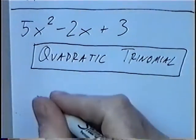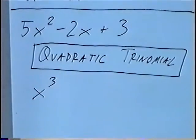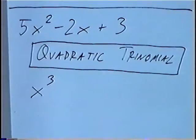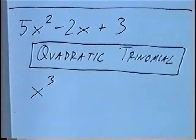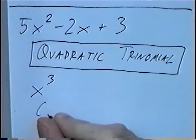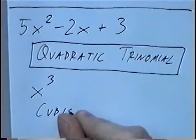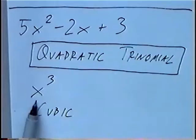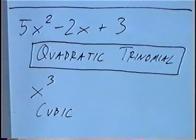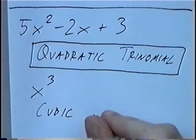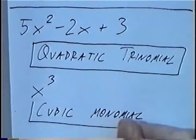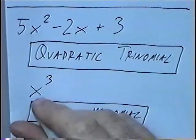Second question: x to the third power, or x cubed. When you have a single variable, the highest exponent is the degree — here, degree 3, which looking at the table is a cubic expression. Classifying by number of terms, we have a single term, so that would be a monomial. Therefore, x to the third power is a cubic monomial.